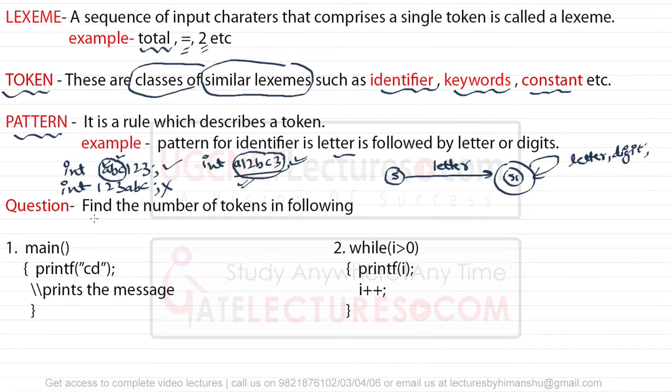Here you can see the question: find the number of tokens in the following program. In this first program, we have to identify how many tokens are present. Main is a token (1), opening bracket (2), closing bracket (3), opening brace (4), printf statement (5), opening bracket (6), the entire string (7), closing bracket (8), semicolon (9). When we discuss tokens, we ignore all comments. The closing brace is another token (10). So there are ten tokens in this program.